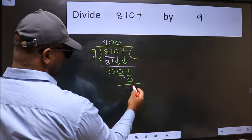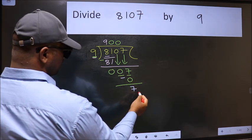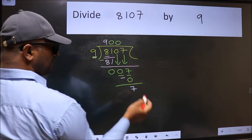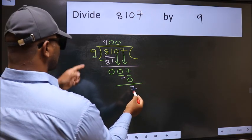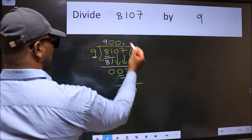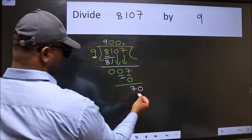Now we should subtract. We get 7. Over here, we did not bring any number down, and 7 is smaller than 9. So now we can put dot and take 0. So, 70.